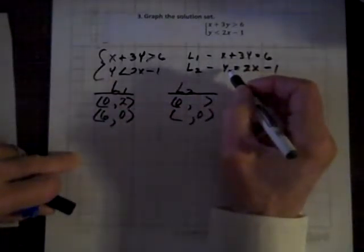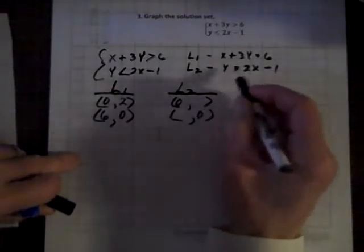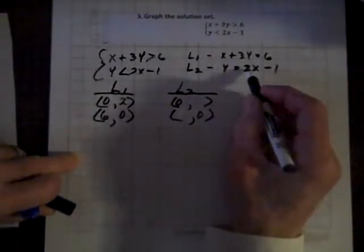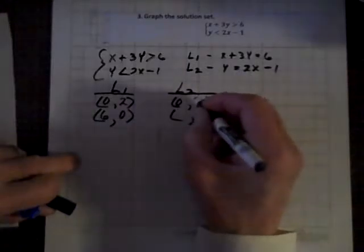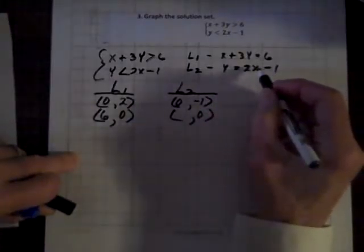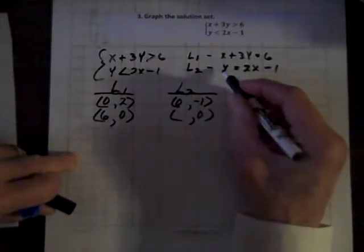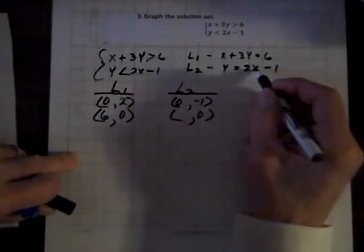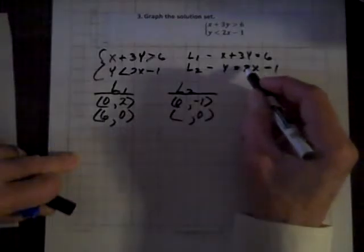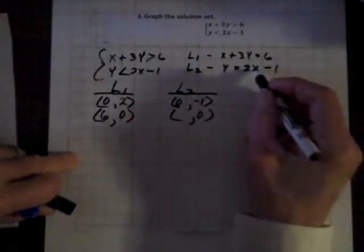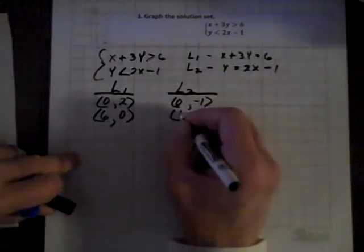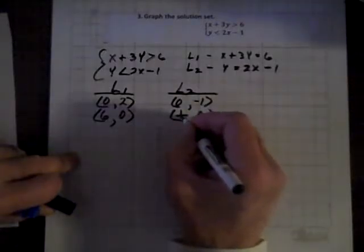For the second line, if we let X be 0, we'll get Y equal to negative 1. And for the case where Y is 0, X will be 1 half, because 2 times 1 half is 1, and 1 minus 1 is 0. So X equals 1 half.